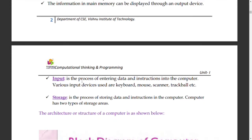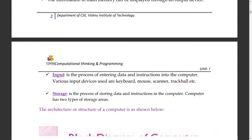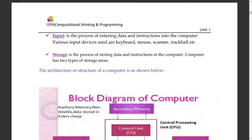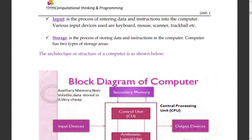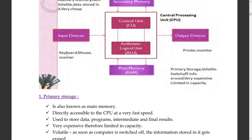Storage is the next part. Storage has two types. It stores the input which we have given or the output which it has to show to us. There are two types: primary storage and secondary storage.